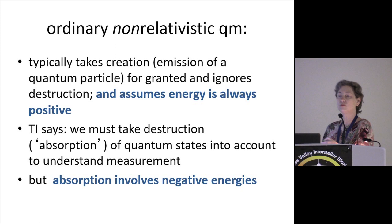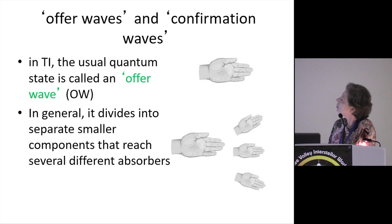This little guy is sort of being a creation operator. It's a sort of a dynamic process that operates on this state of no particles to give you a quantum state. So that actually literally creates a quantum state. And this is what corresponds to emission at the relativistic level. And similarly, quantum states can be destroyed through the action of destruction operators. And these are parts of standard relativistic quantum theory. So these destruction operators operate on the quantum state Q. There's our destruction operator that takes it away and leaves you with no quanta of that state. So this is what absorption is. It's already a real physical process. And it's just that the usual way of interpreting the theory doesn't take these processes into account. So the idea is that ordinary non-relativistic quantum mechanics typically just kind of takes creation emission for granted and ignores destruction of quantum states. And it also assumes that energy is always positive. But the transactional interpretation says that we must take destruction or absorption of quantum states into account to understand measurement. But absorption involves negative energies. This is where there's an oversimplification here because at the relativistic level, you have to kind of distinguish between what are called advanced states that propagate—they seem to propagate backward in time.